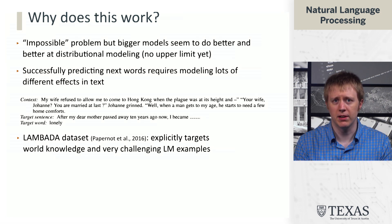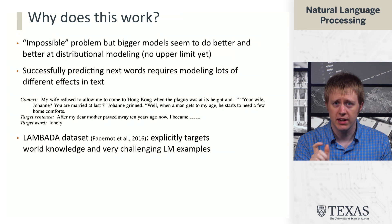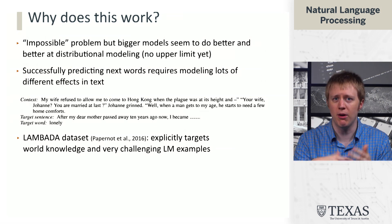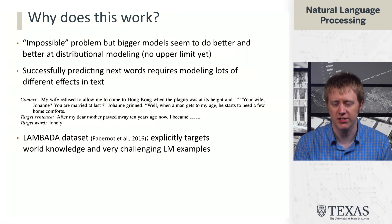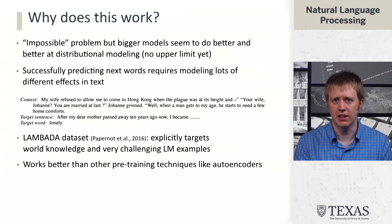For example, in the Lambada dataset, there's a long setup: 'after my dear mother passed away ten years ago, I became blank.' The actual next word is 'lonely.' To predict that as accurately as possible, a model really needs to consume this context and reason about what's going on — you can almost see this as a sentiment analysis problem. Surprisingly, language modeling works better than a lot of other techniques that might be viewed similarly, like autoencoders. Language modeling really seems to be special in how it allows us to learn representations for these different tasks.